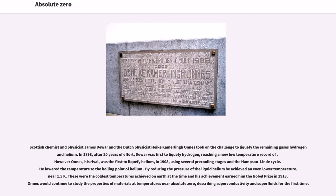By reducing the pressure of the liquid helium he achieved an even lower temperature, near 1.5 Kelvin. These were the coldest temperatures achieved on Earth at the time and his achievement earned him the Nobel Prize in 1913. Onnes would continue to study the properties of materials at temperatures near absolute zero, describing superconductivity and superfluids for the first time.